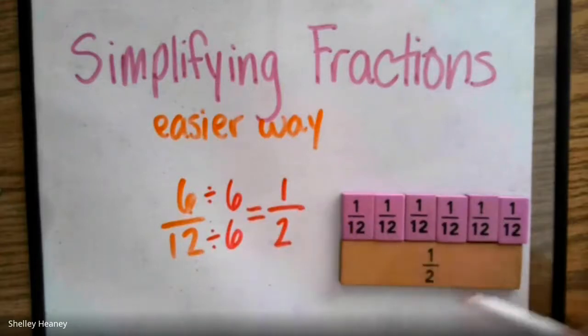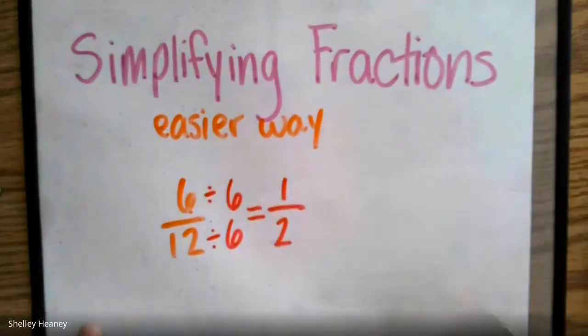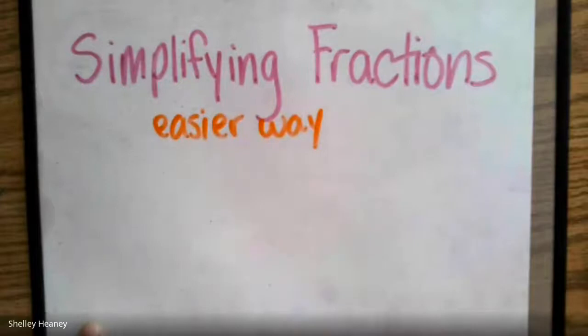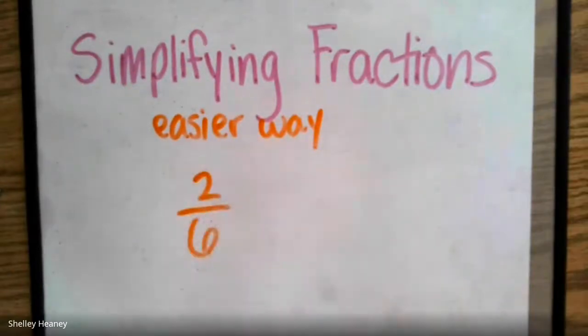If I take a half and I divide it into 6 pieces, that would get a half. Let's go ahead and try this with a different problem. I'm going to go ahead and work on 2 sixths. How can we simplify 2 sixths in a different way?